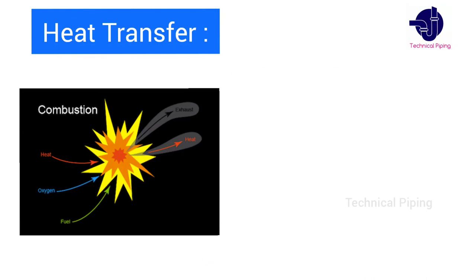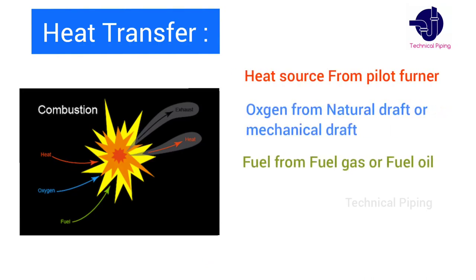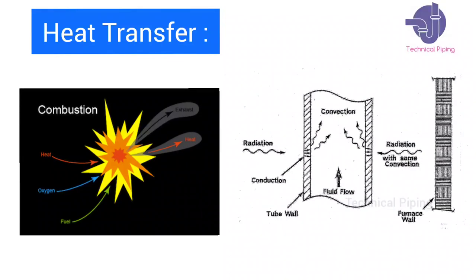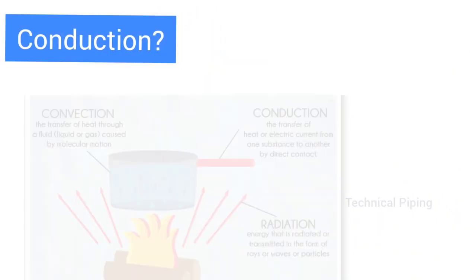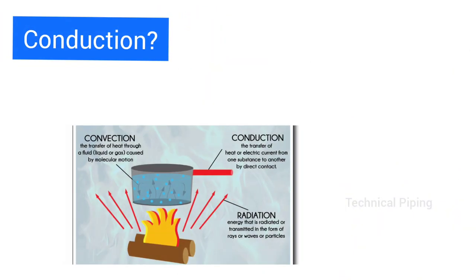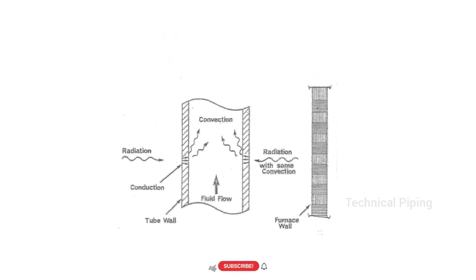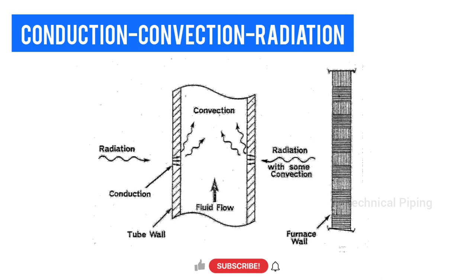To produce heat energy in a heater, we can use fuel gas or fuel oil. The fuel is released as heat energy by the process of combustion. The heat energy is transferred to the process fluid in three ways: by conduction, by convection, and by radiation.